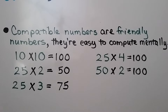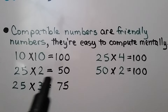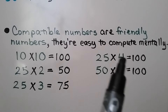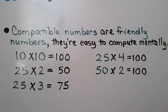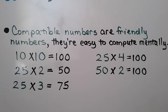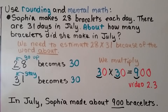Compatible numbers are friendly numbers that are easy to compute mentally. For example, 10×10=100, 25×2=50 (like two quarters), 25×3=75 (like three quarters), and 25×4=100 (four quarters make a dollar). Also, 50×2=100. These are all friendly, compatible numbers. Multiples of 10 are also easy to compute mentally, and we need to use rounding and mental math for estimation.